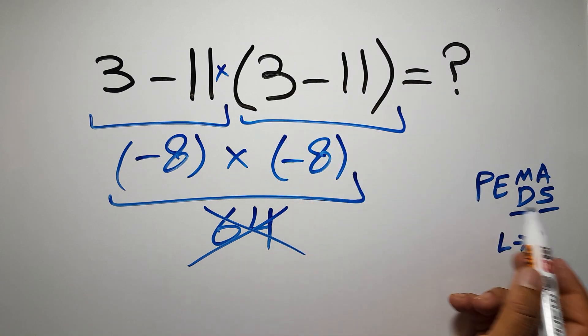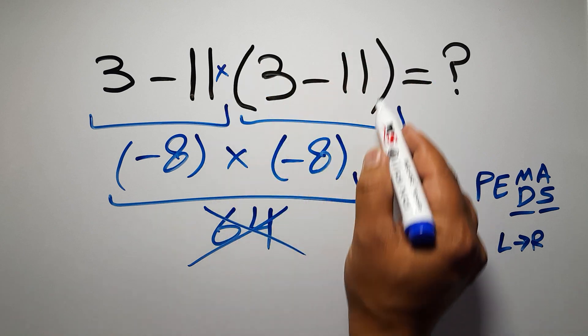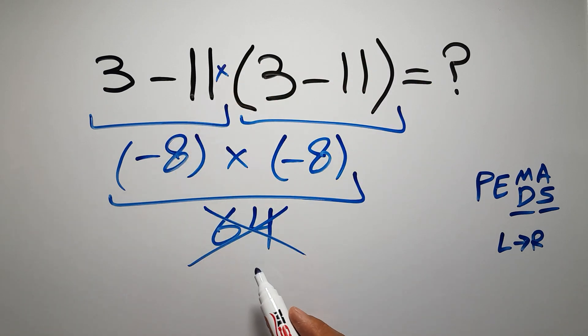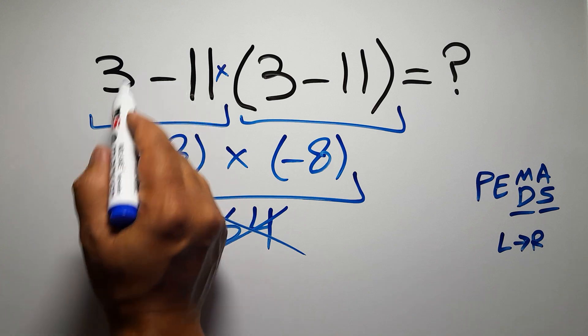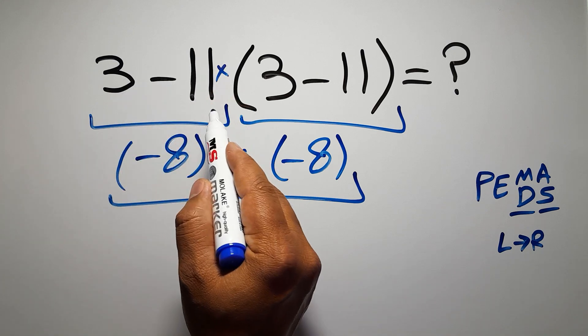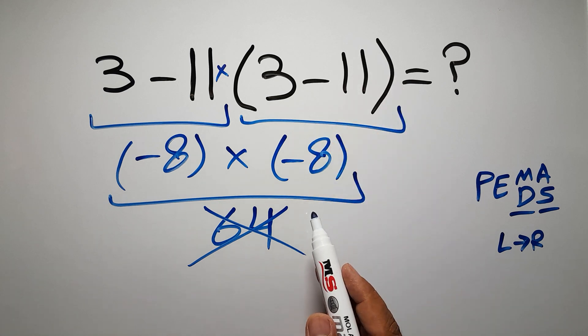According to PEMDAS, first we have to do this parentheses, then this multiplication, and finally this subtraction. If you do this subtraction before this multiplication or this parentheses, it is wrong.